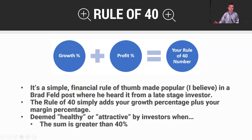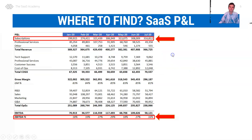It's a simple financial rule of thumb or framework, made popular by Brad Feldman's post, where he heard it from a late-stage investor. The Rule of 40 simply adds growth percentage plus profit percentage, and you're deemed healthy or attractive to investors when the sum is greater than 40%.